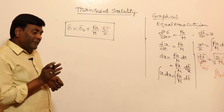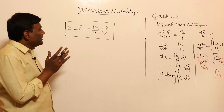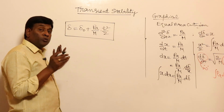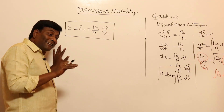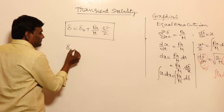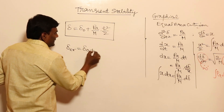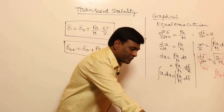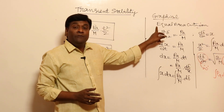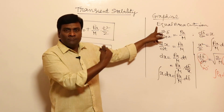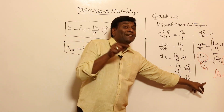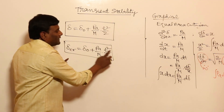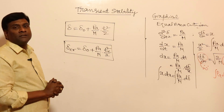Now let us see what is the difference between clearing angle and critical clearing angle. About critical clearing angle, you will understand better once we draw the characteristics. Immediately after this video, we are going to release a video on the difference between clearing angle and critical clearing angle. If it is delta_C and delta_CR (critical clearing angle), this is going to be the critical clearing time. We will discuss that in the next session.